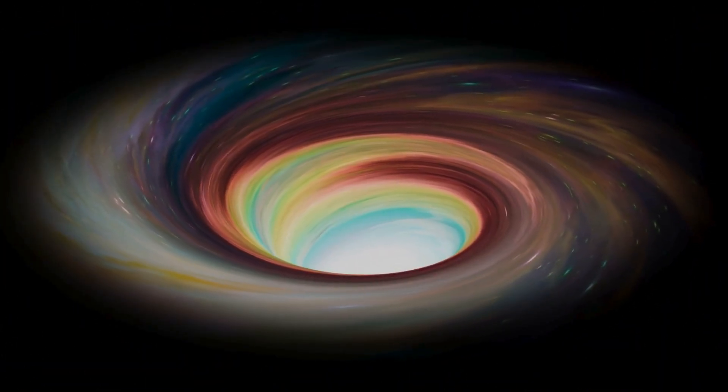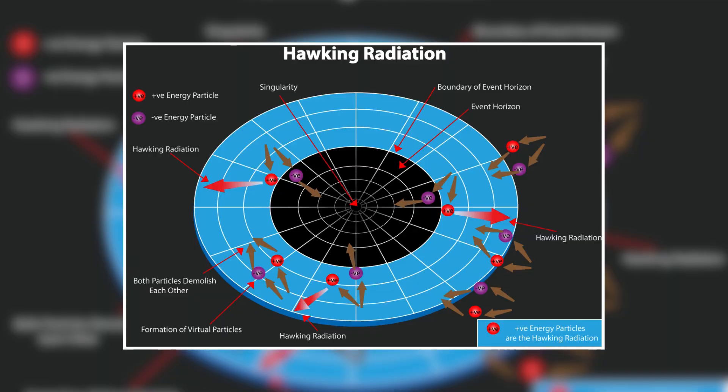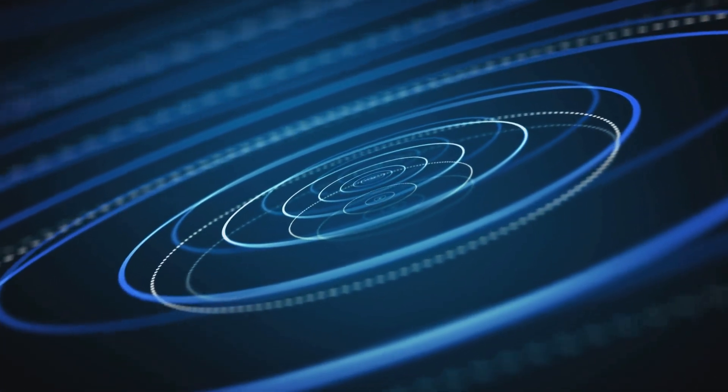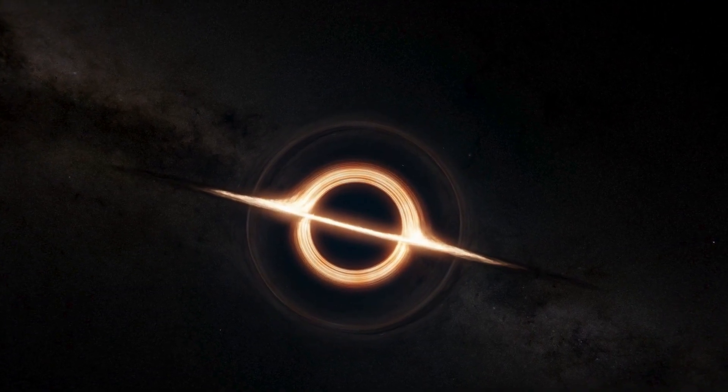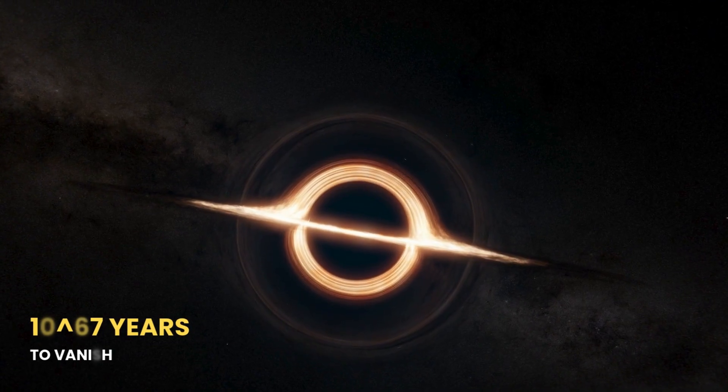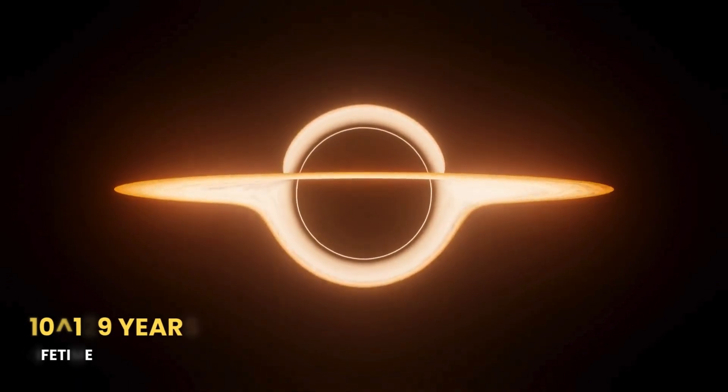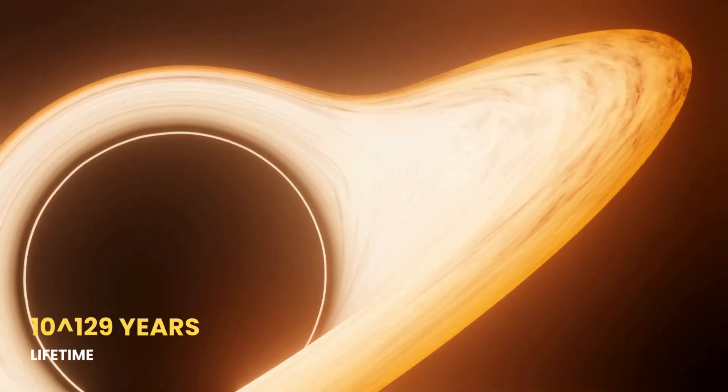Could it ever fade away? In theory, yes. Black holes slowly evaporate by Hawking radiation, leaking particles over incomprehensible time scales. A one solar mass black hole takes about 10 to the 67th power years to vanish. But this thing? Its lifetime would be about 10 to the power of 129 years.